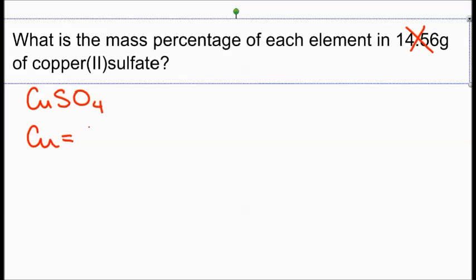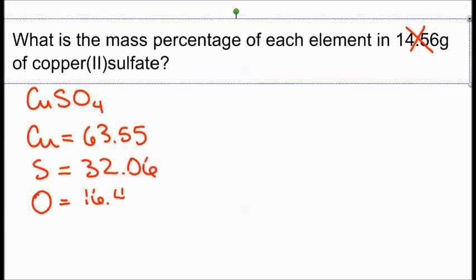Sulfate is a minus 2 ion. And copper has a mass of 63.55 grams per mole, according to the periodic table. Sulfur has a mass of 32.06. And oxygen has a mass of 16.00. And there are 4 of them.